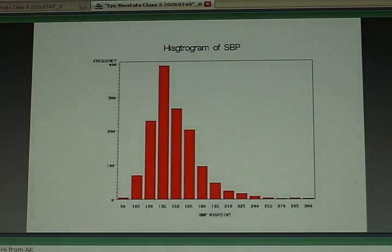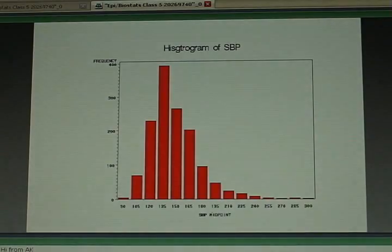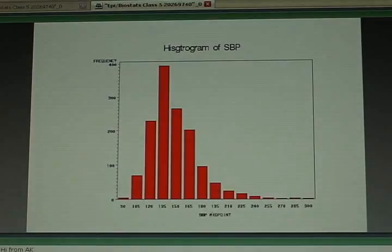But notice there are some people, this tail that shows there are some people with very, very high blood pressures. This might be what you'd expect, a distribution that's skewed, as the statisticians say, with a few people with atypically large values. And that's important when you decide how you're going to summarize your results. Does the summary reflect where most of the people fall or is it influenced by these few people with very high values?